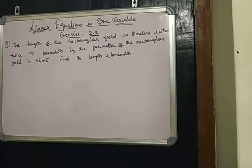The question is: the length of the rectangular field is 8 meters less than twice its breadth. If the perimeter of the rectangular field is 56 meters, find the length and breadth.